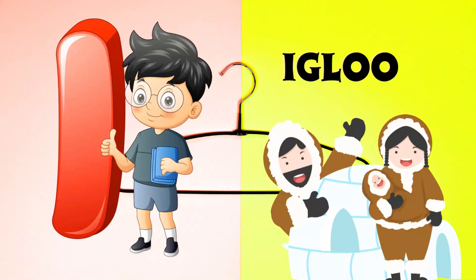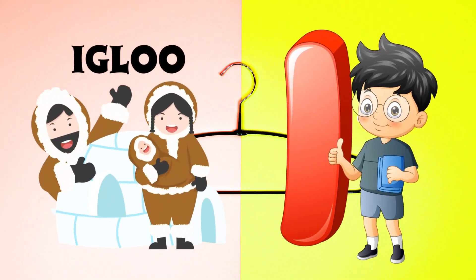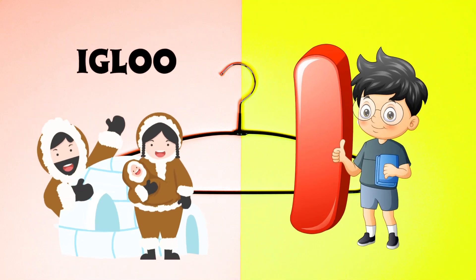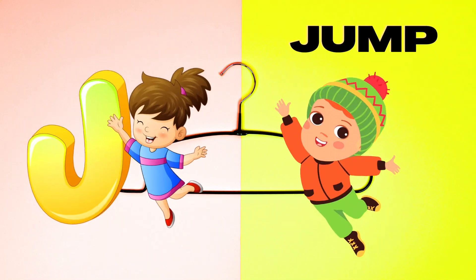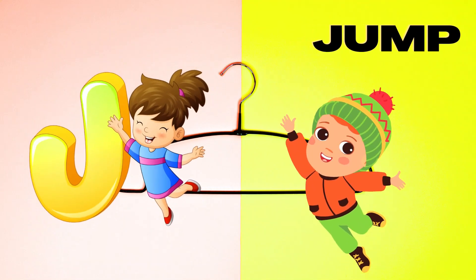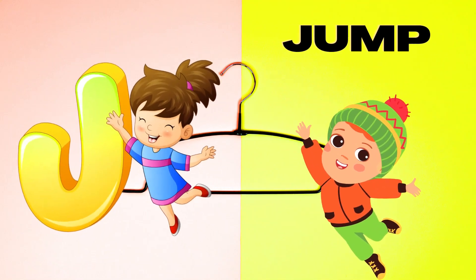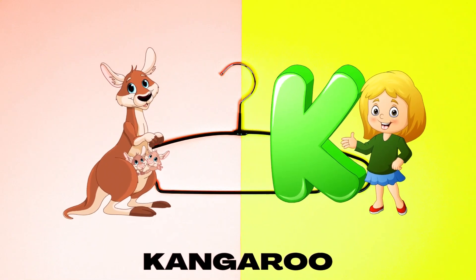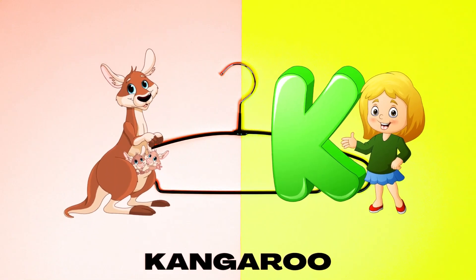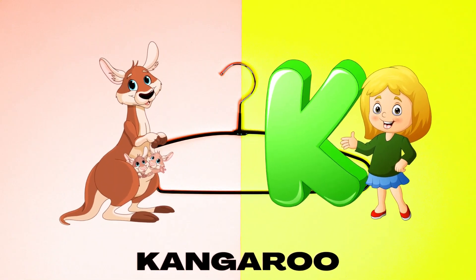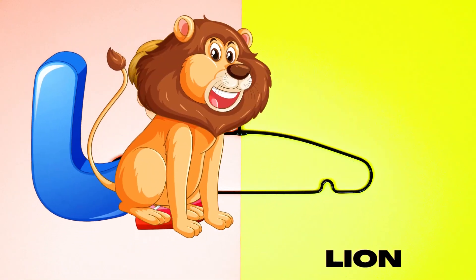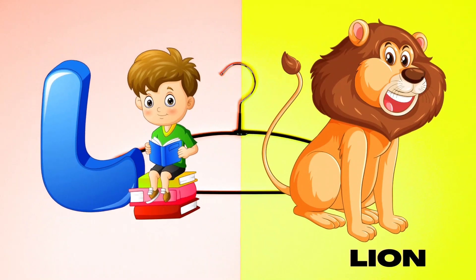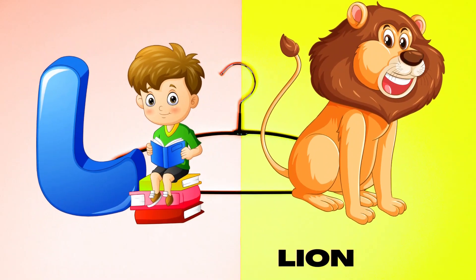I is for Igloo, I-I-Igloo. J is for Jump, J-J-Jump. K is for Kangaroo, K-K-Kangaroo. L is for Lion, L-L-Lion.